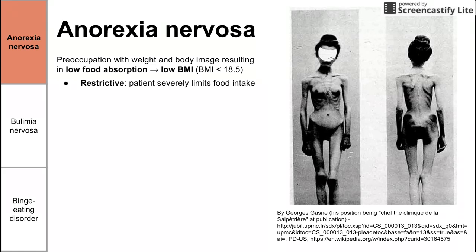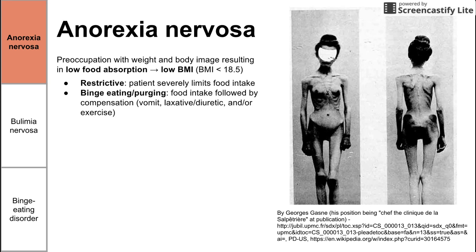There's the restrictive type, where a person severely limits their food intake — if they don't eat food, they won't absorb calories. The next subtype is the binge eating/purging type, where somebody eats and then compensates. You can remove food from either end of the GI tract: inducing vomiting, inducing diarrhea with a laxative, or over-exercising to purge. Either way, the person ends up with a low BMI.